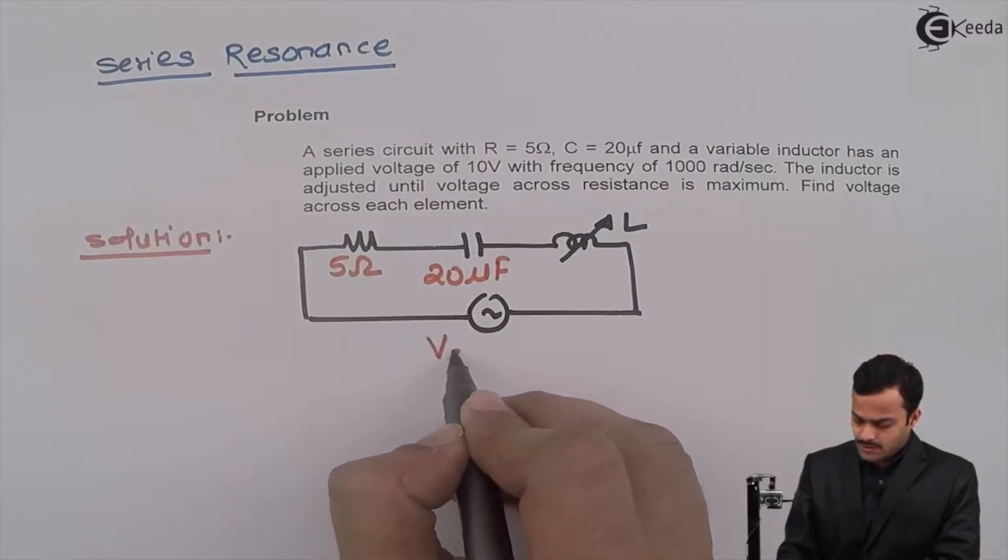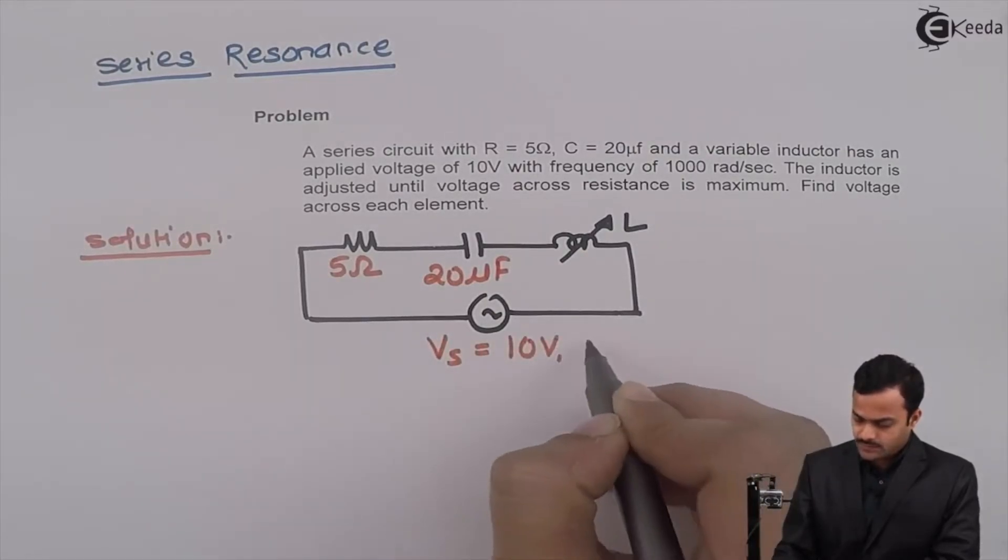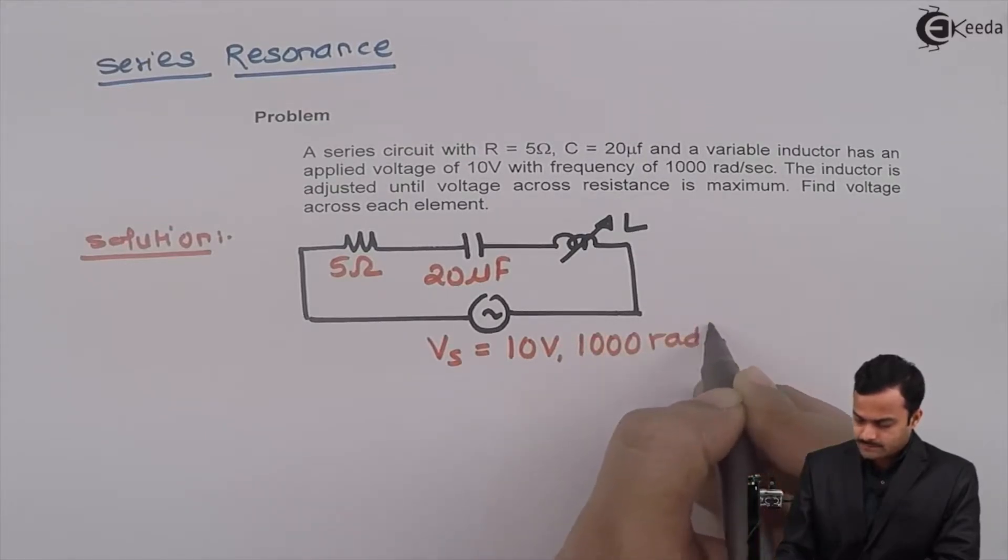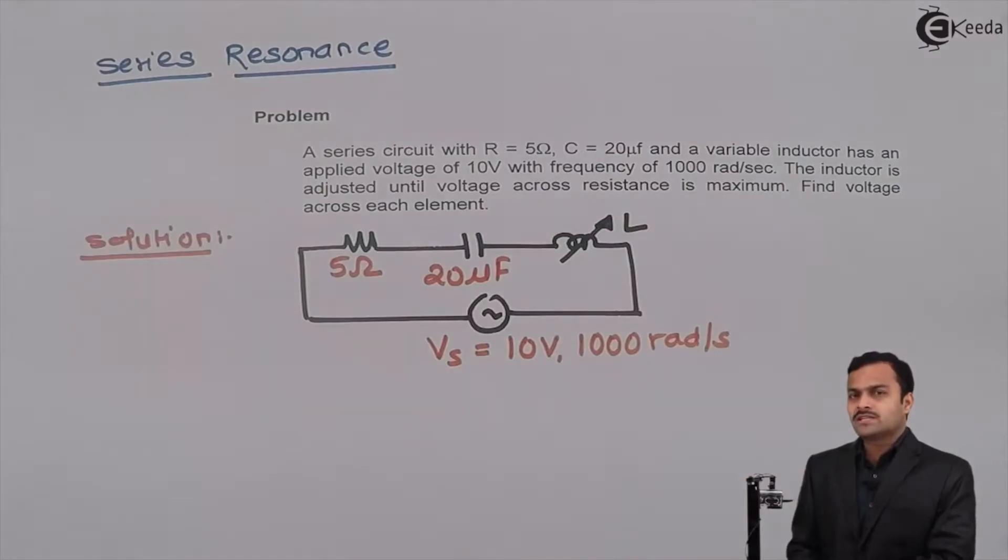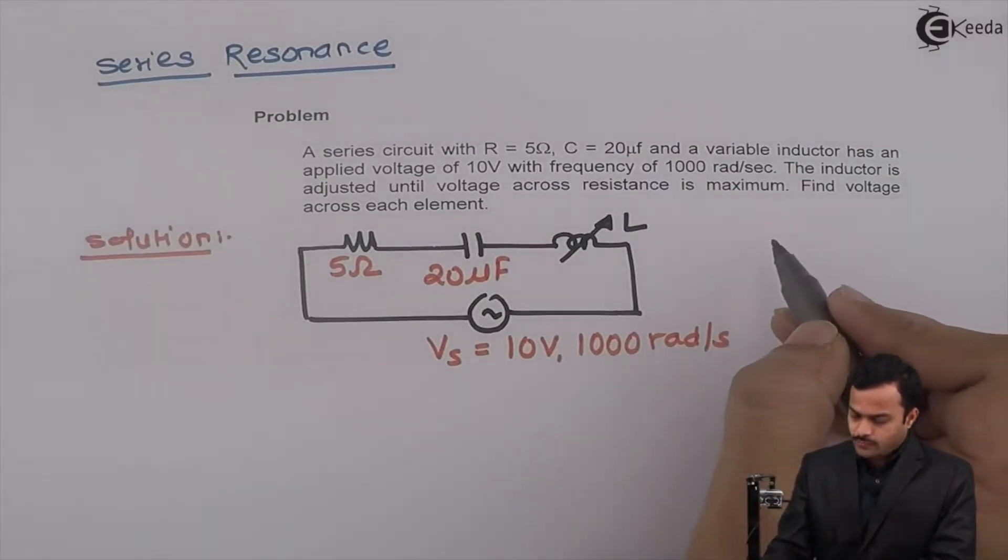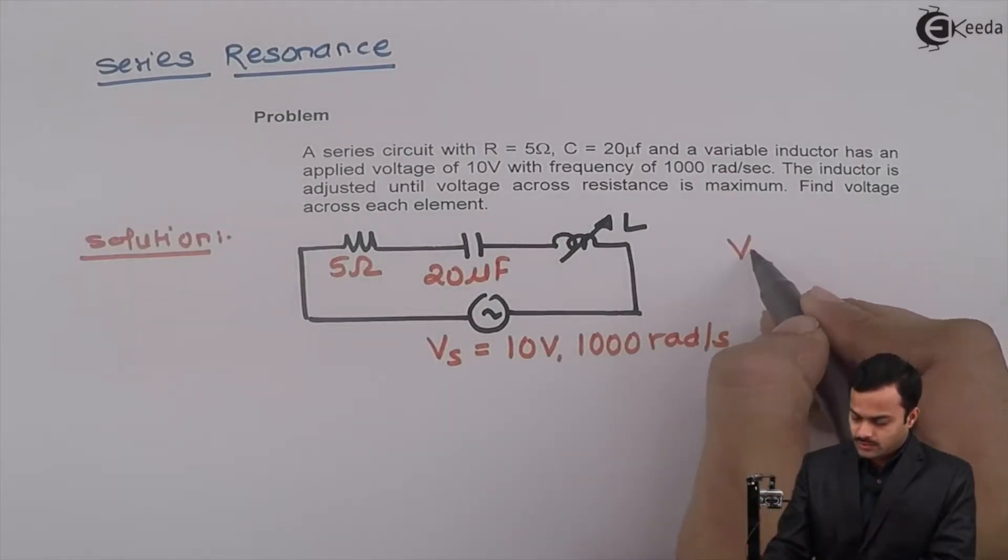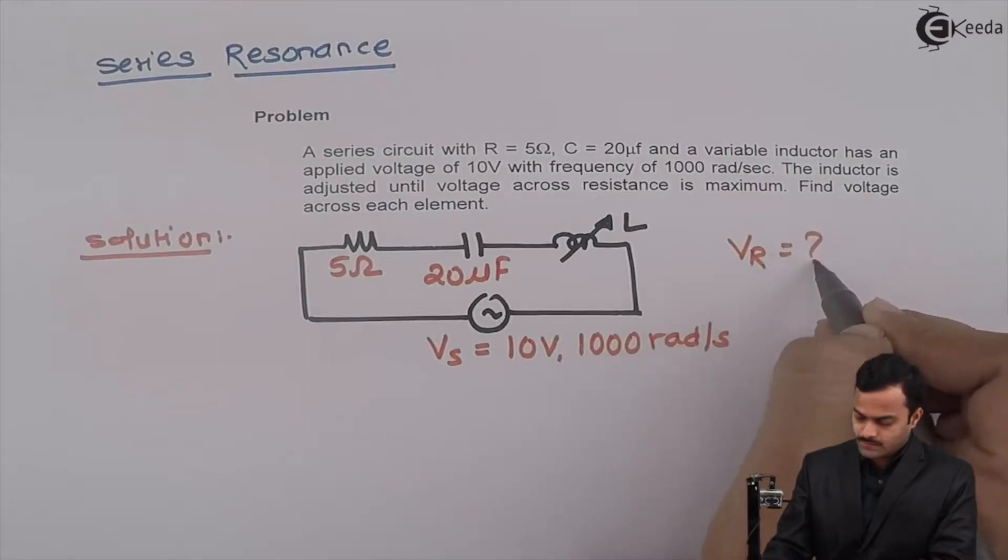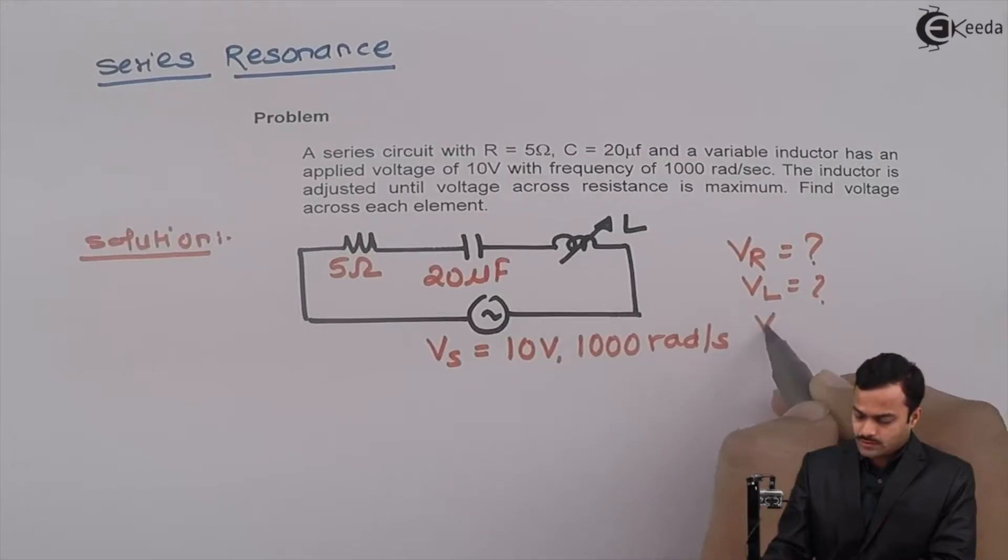Supplied voltage is 10 volt with a frequency 1000 radian per second. And what we are supposed to obtain? Find voltage across each element. Voltage across resistance we want, voltage across inductance and voltage across capacitance.